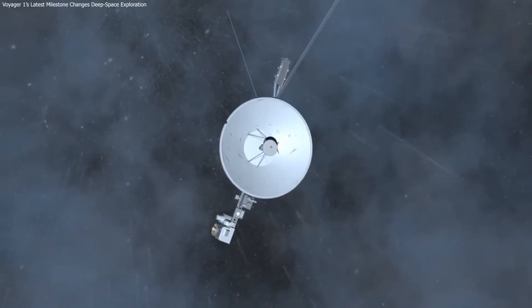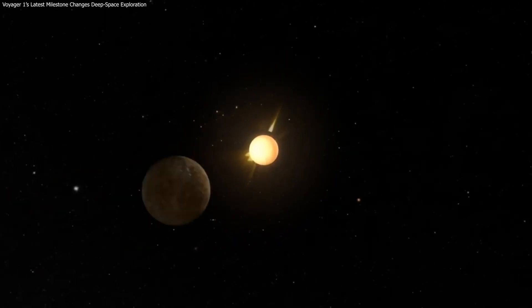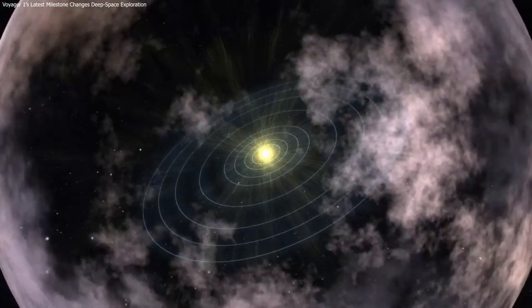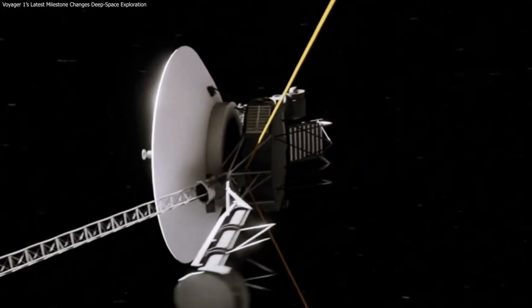Voyager 1 reaching one light day is a quiet but historic step into interstellar space. Its final years will continue refining what we know about our solar system's boundary. And long after it falls silent, its journey will remain one of humanity's defining achievements.